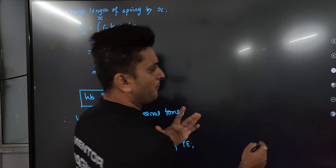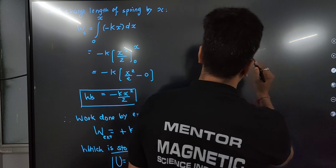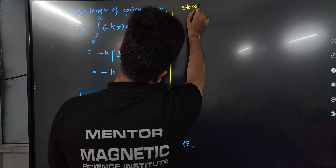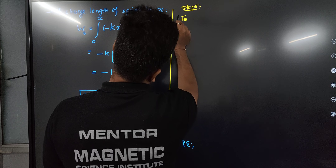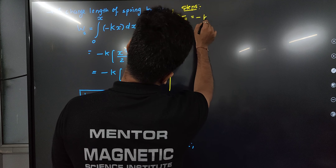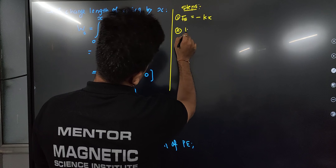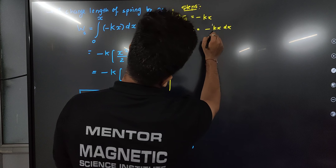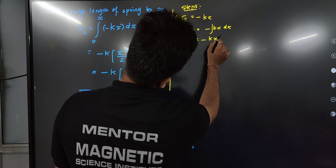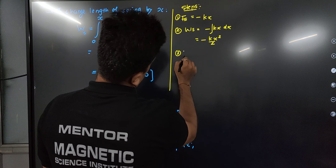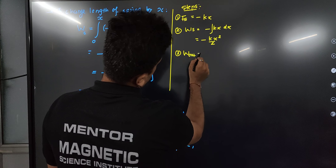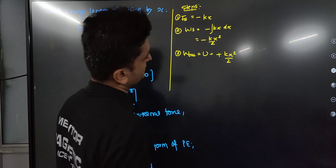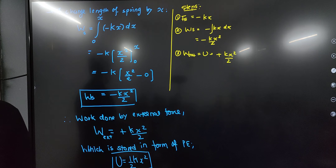This is a very important theory to remember. The simple steps are: spring force = -kx; work done by the spring = integrate that force = -kx²/2; so work done by external force = +kx²/2, and this is the potential energy stored in the spring.